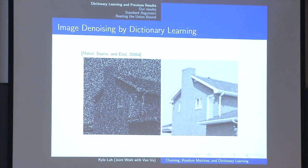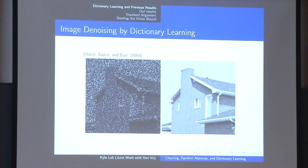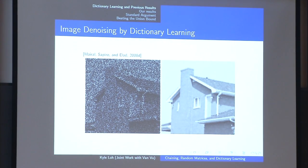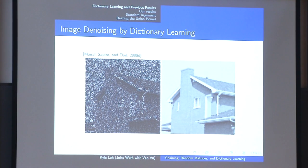One potential application is image denoising. Assuming you have a nice dictionary for the original image, I add some random noise to it. The basic algorithm or intuition is pretty simple: go over each patch, approximate it with the dictionary that I know, then take the average. The outputs on the right are fairly impressive.